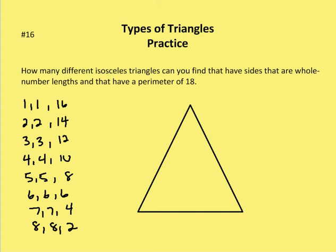Continuing: 6, 6, and 6; 7, 7, and 4; and 8, 8, and 2. So remember, we'll consider the unequal side the third side in each case. The two equal sides have to be greater than the third side. So 1 plus 1 is not greater than 16 — not a possibility. 2 plus 2 is not greater than 14 — not a possibility. 3 plus 3 is not greater than 12 — not a possibility. 4 plus 4 is not greater than 10 — not a possibility.